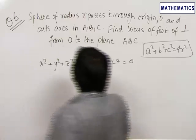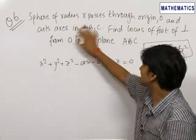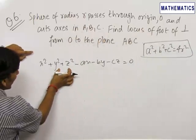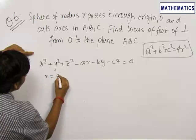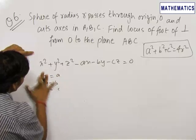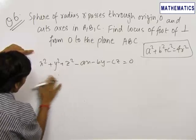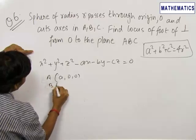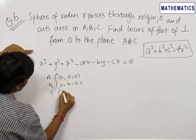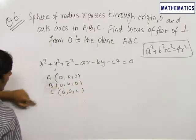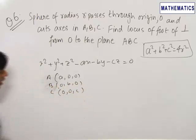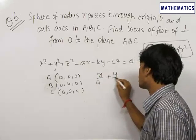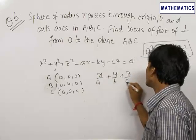Now let us find out where this sphere cuts the axes. It cuts the x-axis at point A. For finding the x-axis intercept, we put y and z equal to 0, and get x = A. Similarly, we get y = B and z = C. So point A is (A, 0, 0), B is (0, B, 0), and C is (0, 0, C). The equation of the plane formed by these three points is x/A + y/B + z/C = 1.